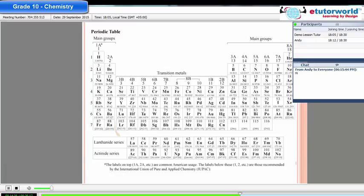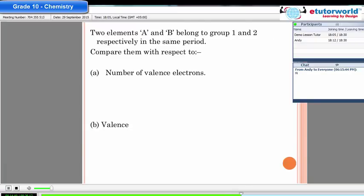Okay, the first question I have for you is two elements A and B belong to group 1 and 2 respectively in the same period. Compare them with respect to the number of valency electrons and valency. Now you know that group number indicates the number of valency electrons, isn't it? Yeah.